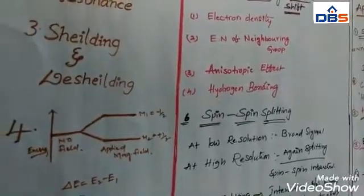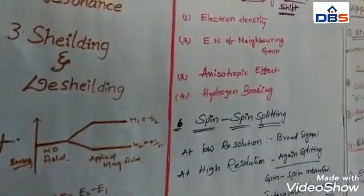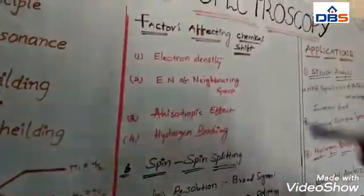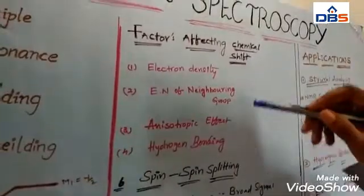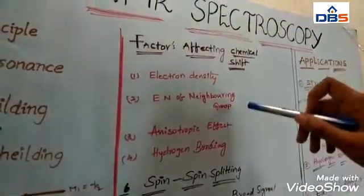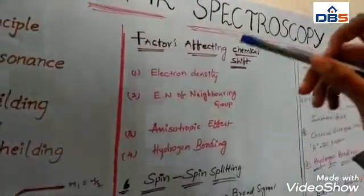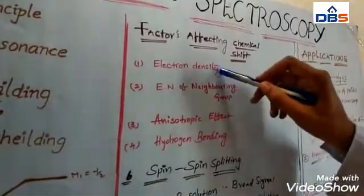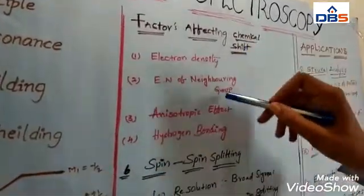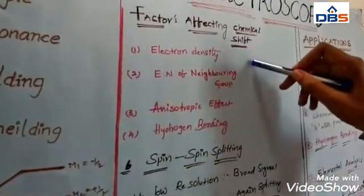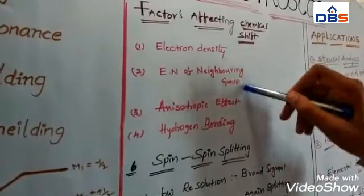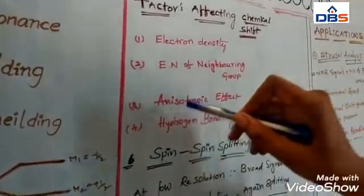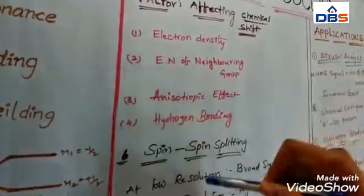What kind of factors can affect chemical shift? Generally, the chemical shift can be affected by four reasons: one is the electron density, another one is the electronegativity of the neighboring group, another one is the anisotropic effect, and the last one is hydrogen bonding. These four factors are causes for affecting the chemical shift.